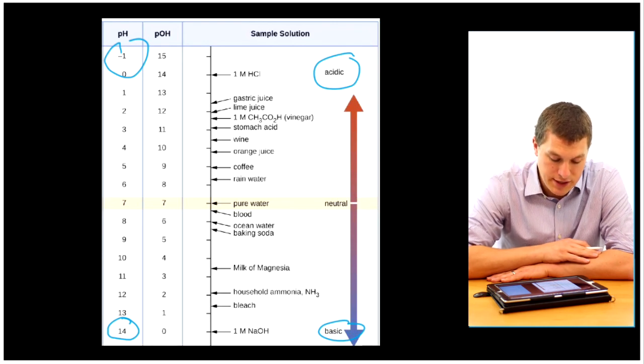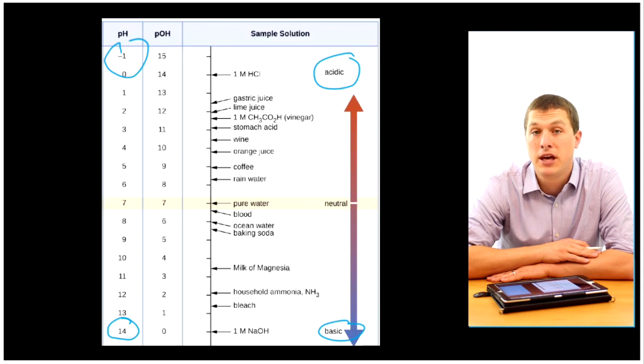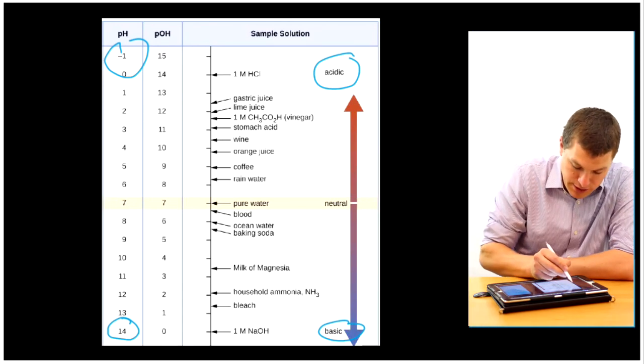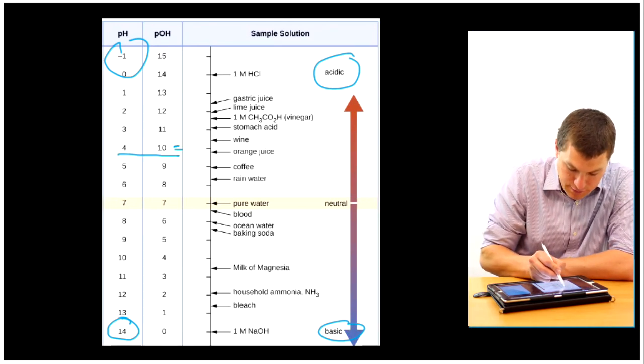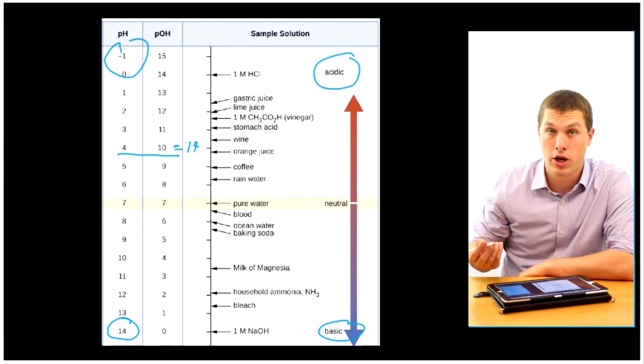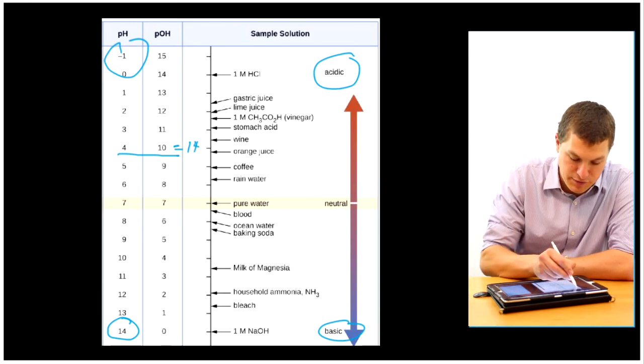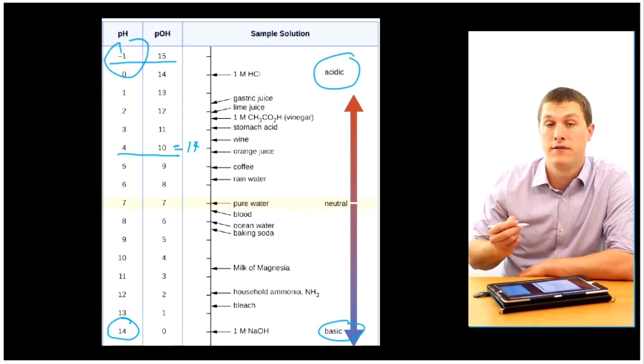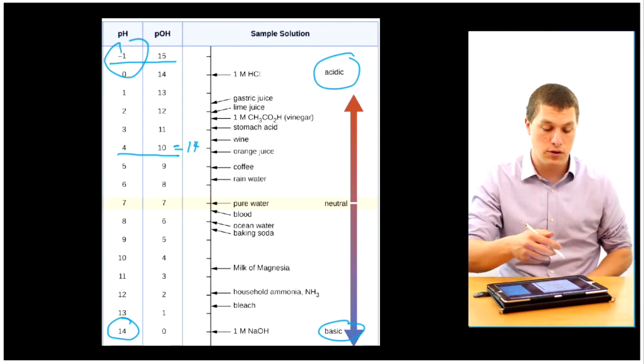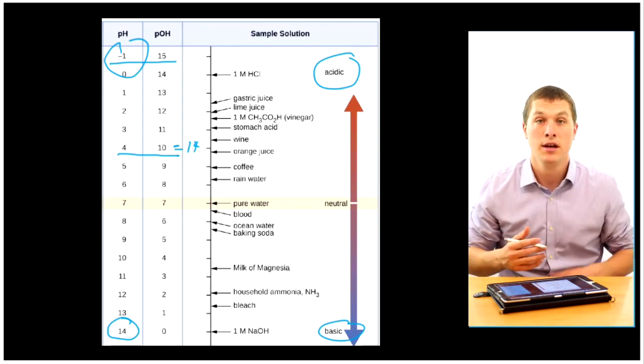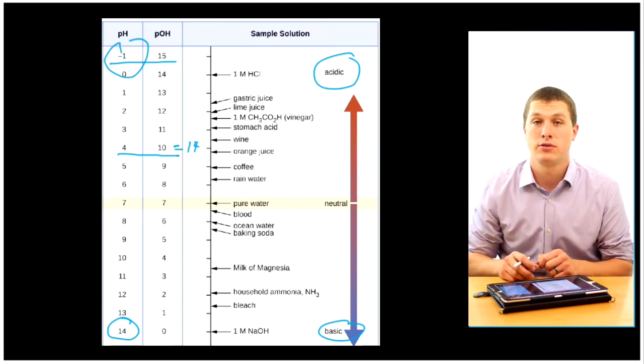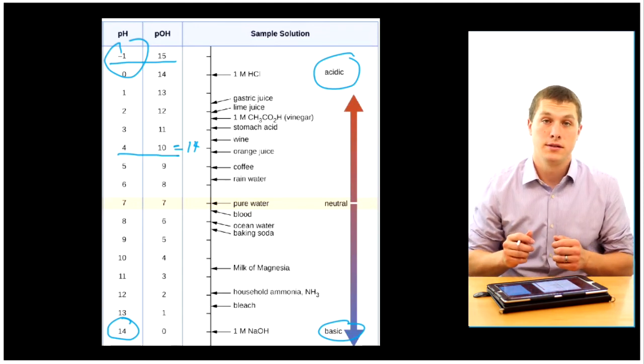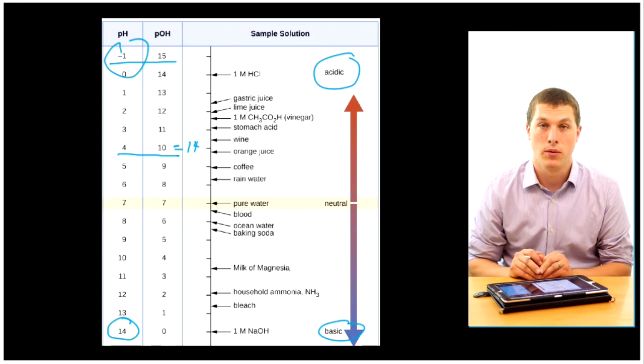And what you'll notice is that if you add up pH and pOH, you always get 14. So for example, 4 plus 10 gives you 14. So if I have a pH of 4, I'll have a pOH of 10. And if I have a pH of minus 1 and a pOH of 15, that also adds up to 14. So every single row here is going to add up to 14. Our solution, if it's at 25 degrees Celsius, will always add up to 14 if you combine the pH and pOH.